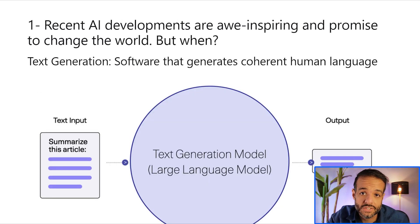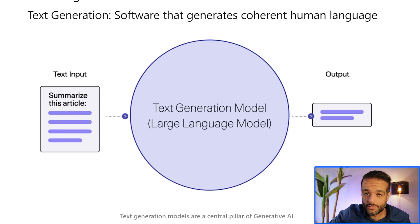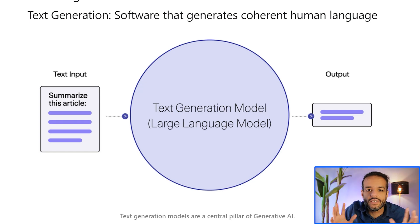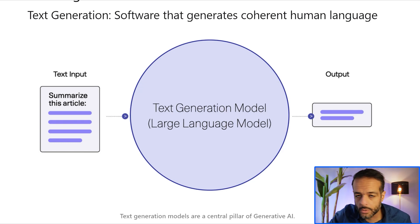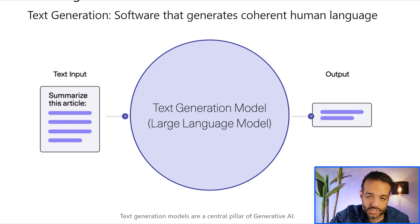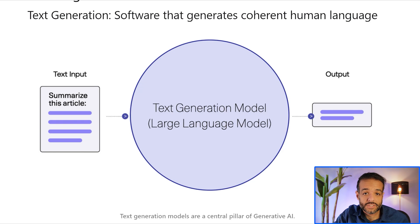Now we can break it down and see what generative AI is and why it's fascinating. At the moment, if you're thinking about products that are out there in the marketplace, you can talk about text generation models and image generation models. These are the two most exciting components of generative AI at the moment. They're not the only ones that will come in the future — we'll have music being generated by AI, we'll have videos, we'll have stories that have multiple components.